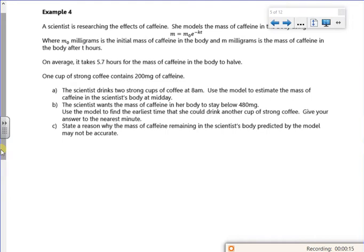So it says a scientist is researching the effects of caffeine. She models the mass of caffeine in the body using M equals M naught e to the minus kt, where M naught is the initial mass of caffeine and M is the mass of caffeine after t hours.